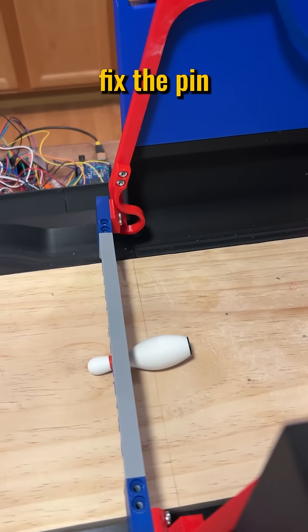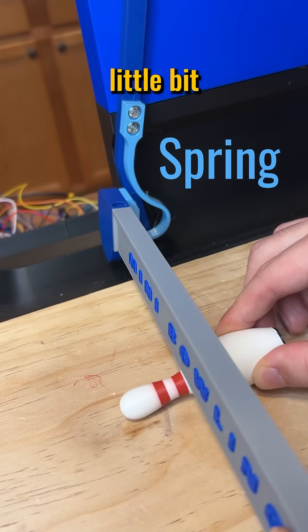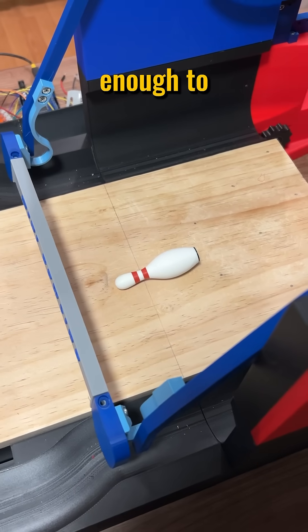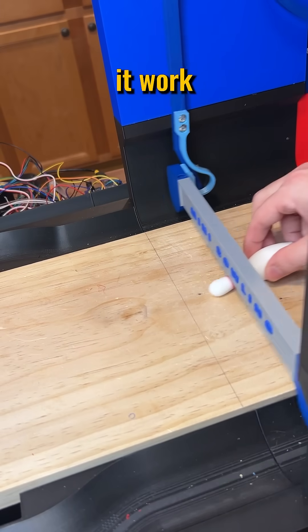But now we need to fix the pin jamming issue. So I designed a plastic spring that bends just a little bit when it hits a pin, but it's still strong enough to push it away when needed. It was tricky to get the right tension in the spring to make it work just right.